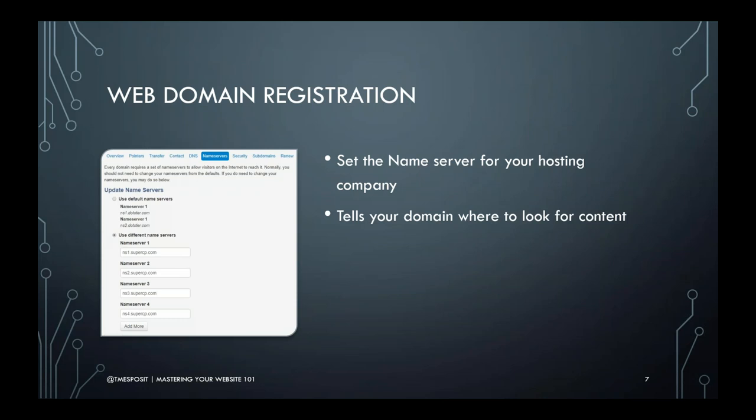Once you've registered your domain, there's invariably a name server setting on the web domain website. This is where you fill in the host information you'll get from the server — this is where you associate the URL with where your files will be stored. You have to declare it on the site where you register the URL to tell it where to find the files in your WordPress site, using the name service tab.